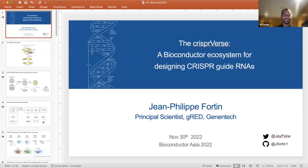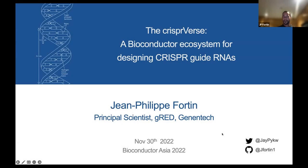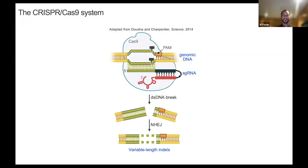Very excited today to talk about the bioinformatics work that we do in the CRISPR space at Genentech. Just a quick introduction for the CRISPR-Cas9 system. The CRISPR-Cas9 system is composed of two components: there's a nuclease called Cas9, and the role of the nuclease is to go cut the DNA.